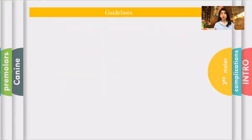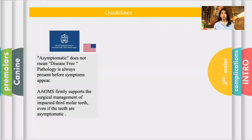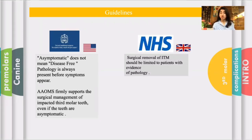Starting with the most common impacted tooth, which is the lower third molar, and the guidelines of its extraction. For the American Association of Oral and Maxillofacial Surgeons, asymptomatic does not mean disease-free, so they firmly support the surgical management of impacted tooth and extracting it. On the other hand, for the NHS in the UK, surgical removal is not very preferable and is limited only for patients who have a severe recurrent episode of pericoronitis.